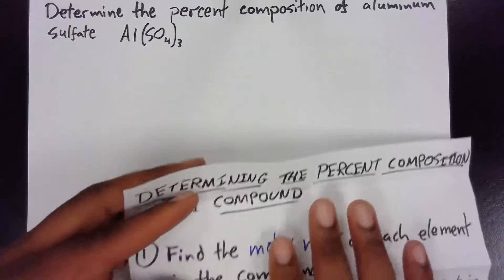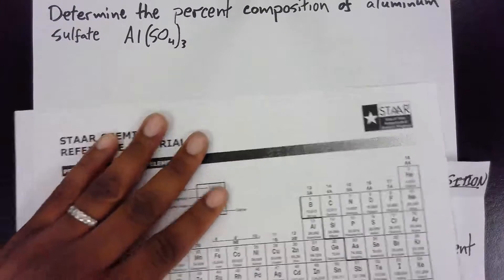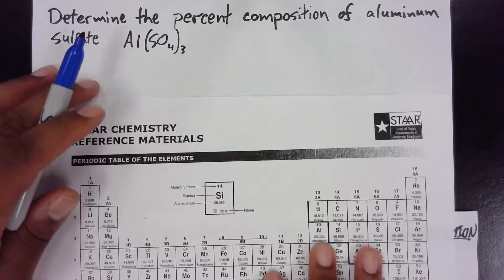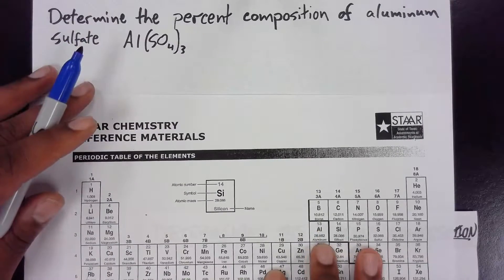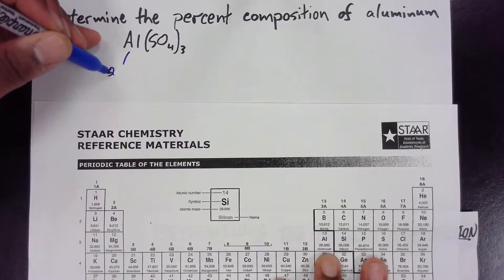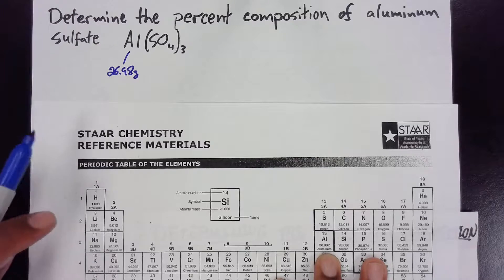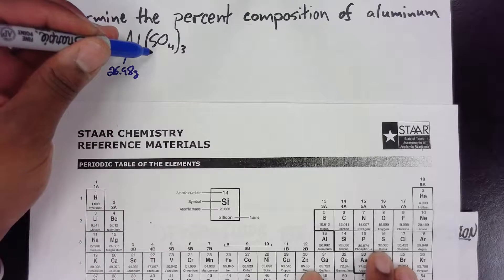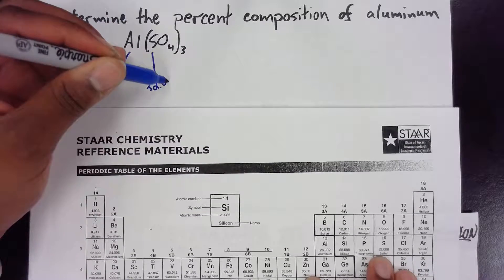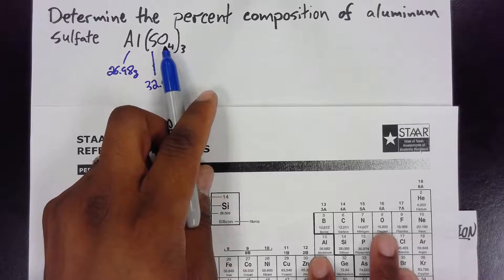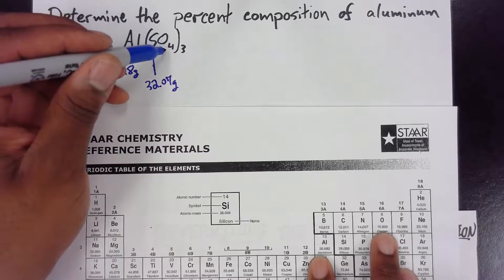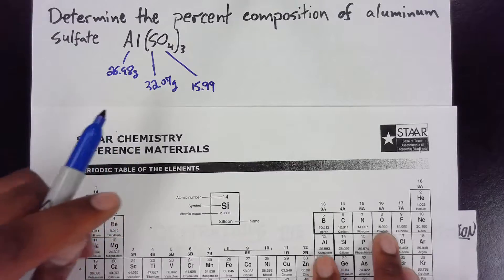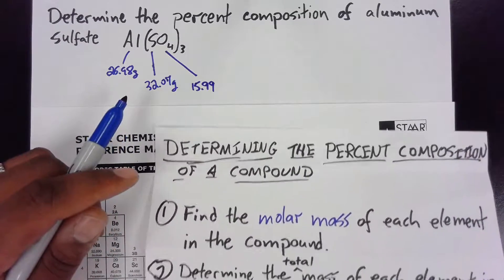Using our periodic table, we're going to get the molar mass of each element. The molar mass of aluminum is 26.98 grams. The molar mass of sulfur from the periodic table is 32.07 grams. The molar mass of oxygen from the periodic table is 15.99. That was the first step — find the molar mass of each element.